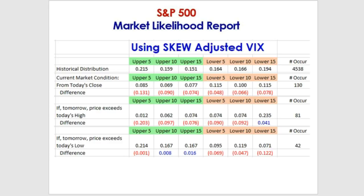What we're looking for in the market likelihood report is: based upon when our current market condition has occurred in the past and what the market did during those 127 occurrences, what is the market likely to do now? To answer that, we use price distribution bands. Rather than just looking at the average move, I like to look at a distribution set of bands.